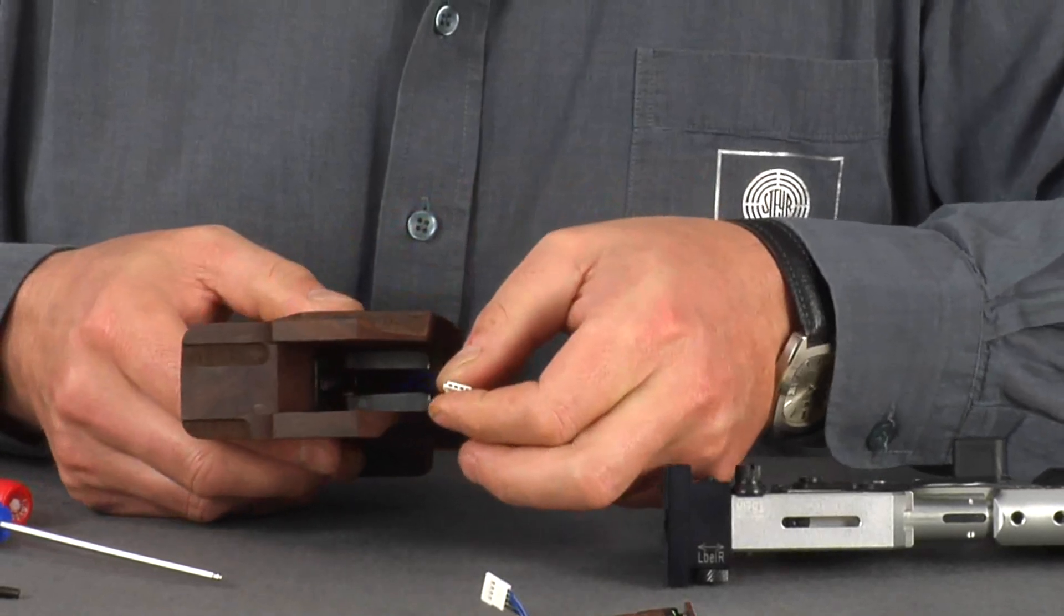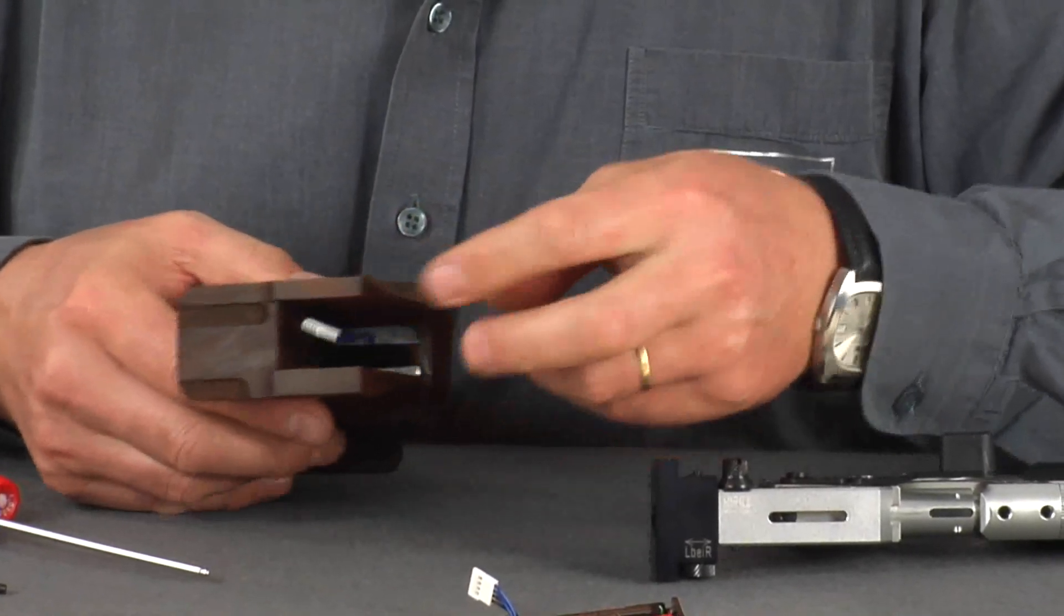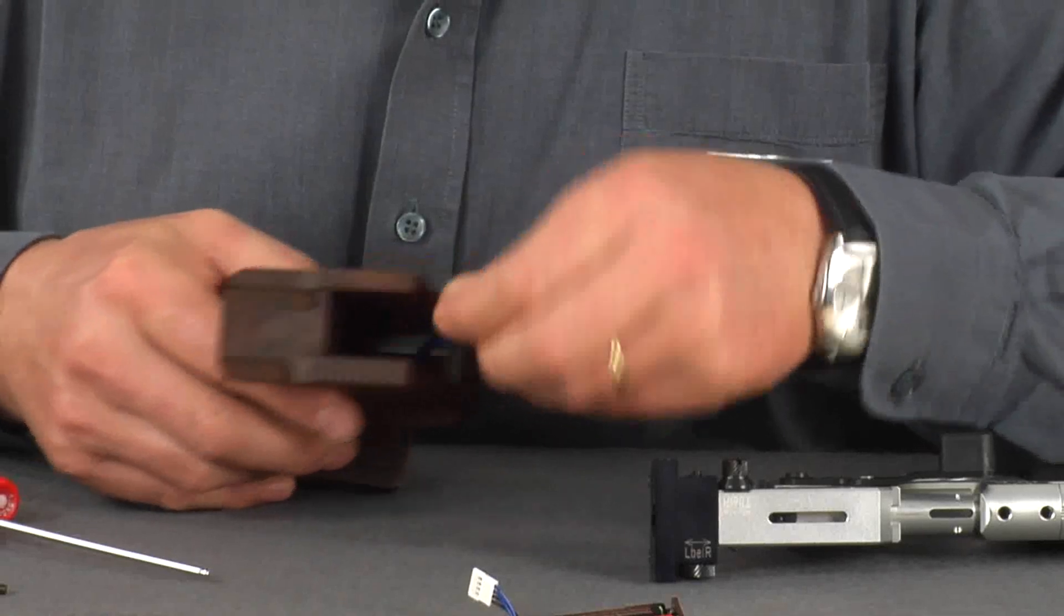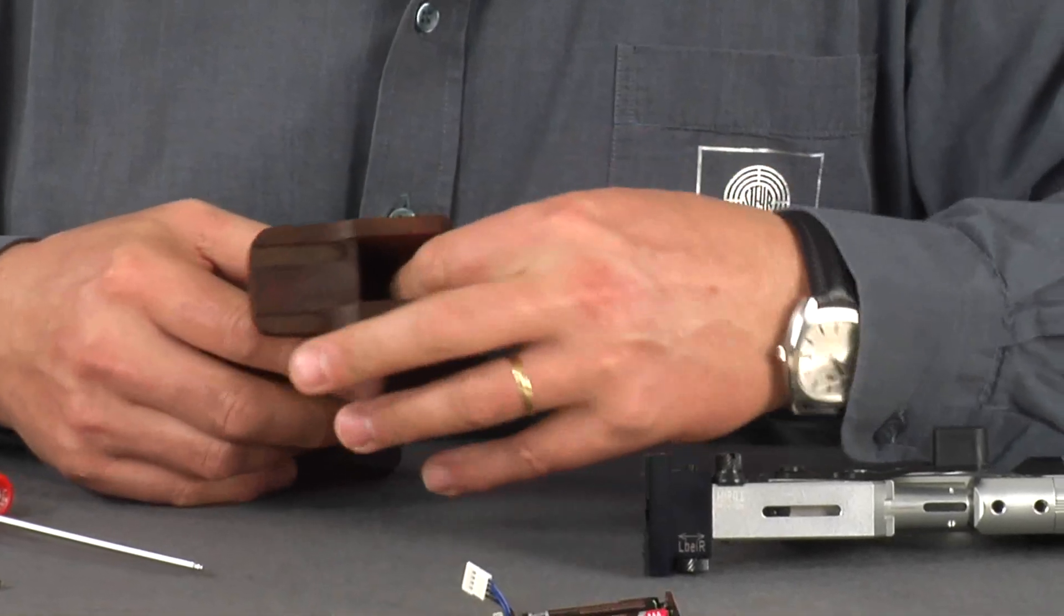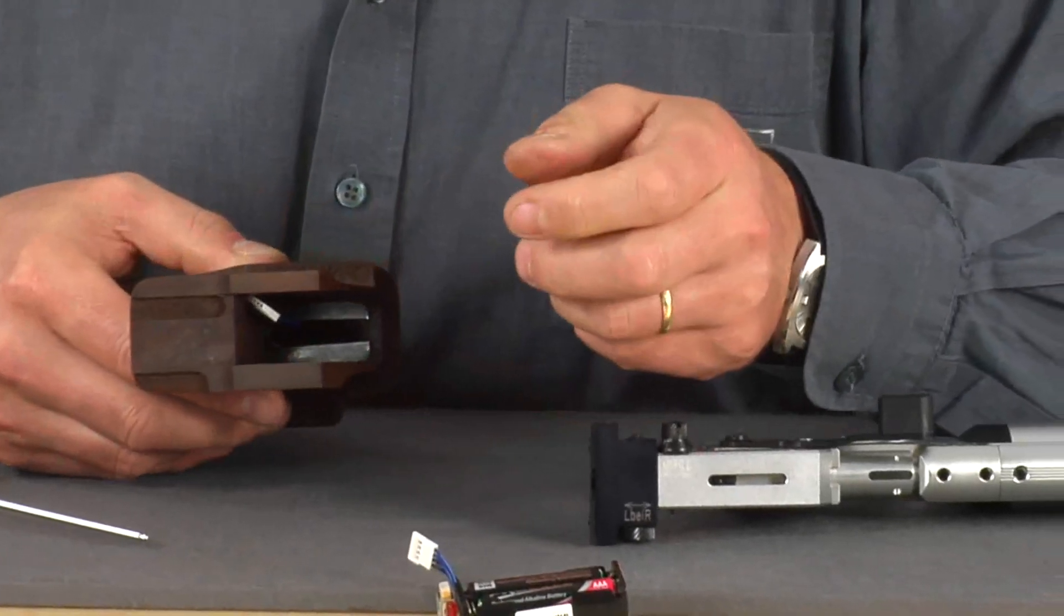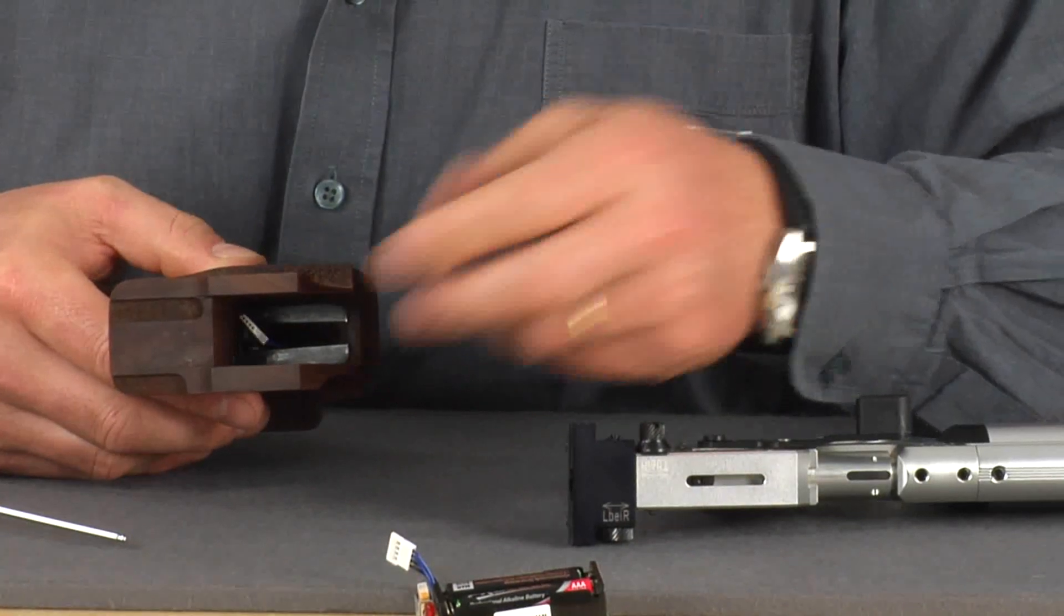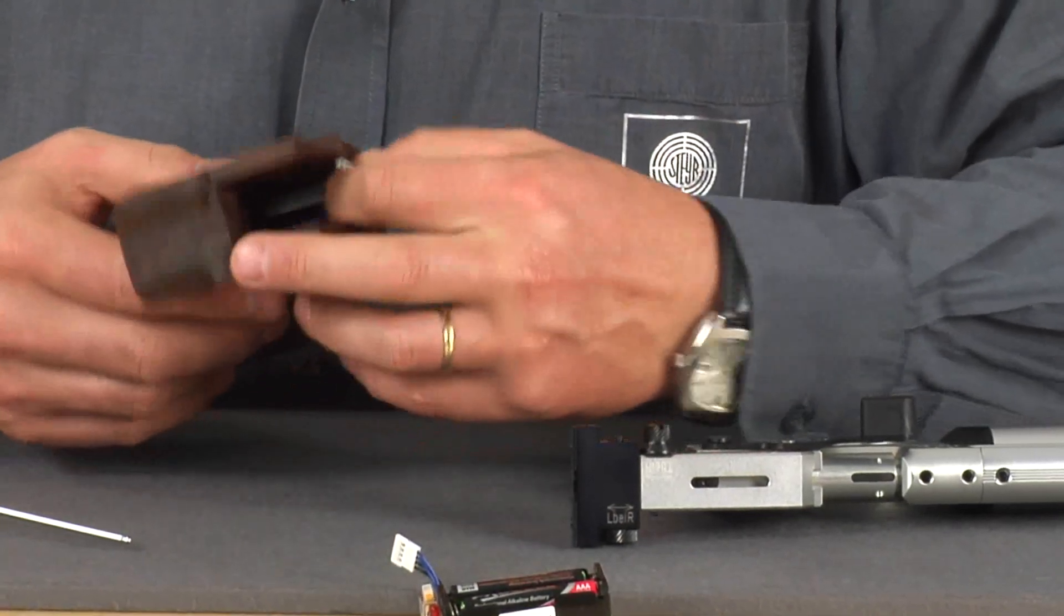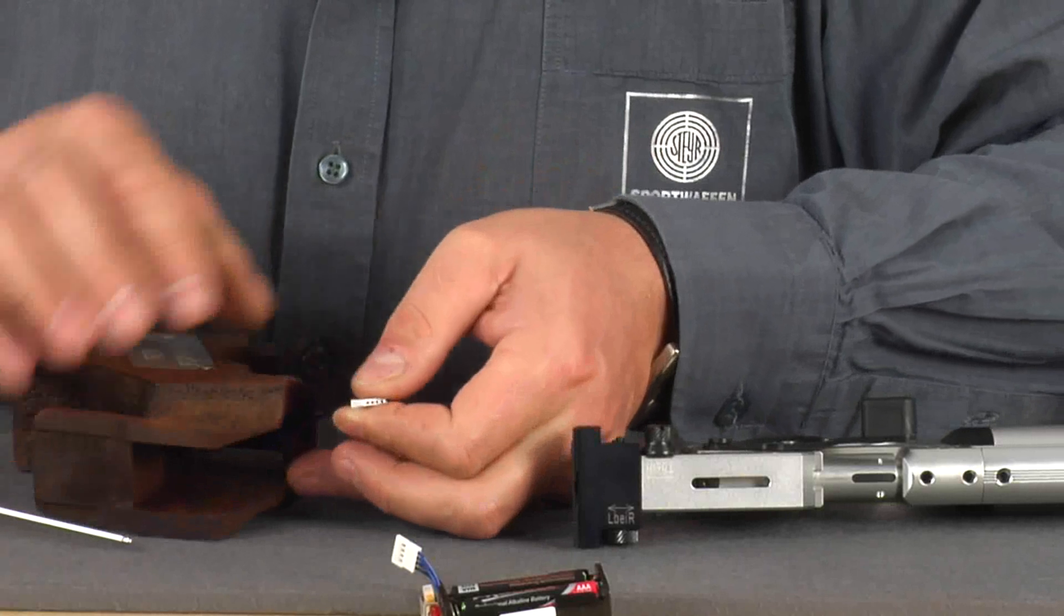Now we reattach the grip. Pull out the cable connector. With the correct installation of the module, the cable should be free to extend and then return into the body of the grip. Join the connector and combine the grip and the weapon together.